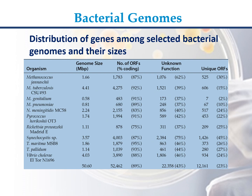M. tuberculosis CSU#93: genome size 4.41 Mb, 4275 ORFs (92%), unknown function 1521 (39%), unique ORFs 606 (15%). M. genitalium: genome size 0.58 Mb, 483 ORFs (91%), unknown function 173 (37%), unique ORFs 7 (2%). M. pneumoniae: genome size 0.81 Mb, 680 ORFs (89%), unknown function 248 (37%), unique ORFs 67 (10%).